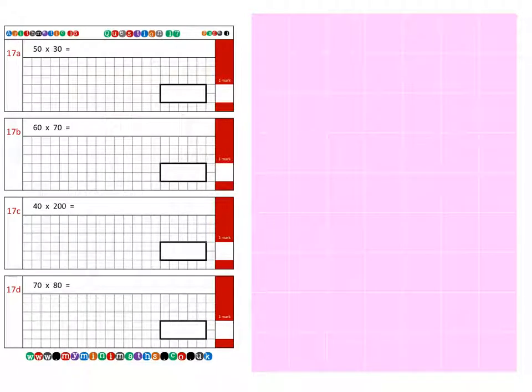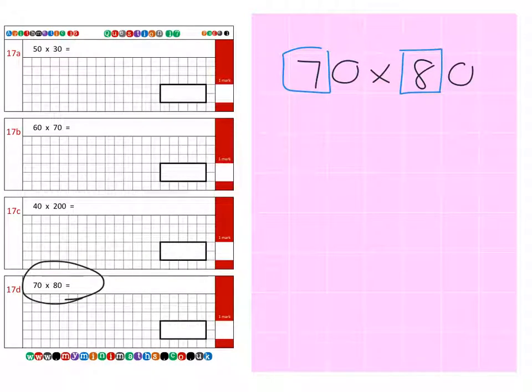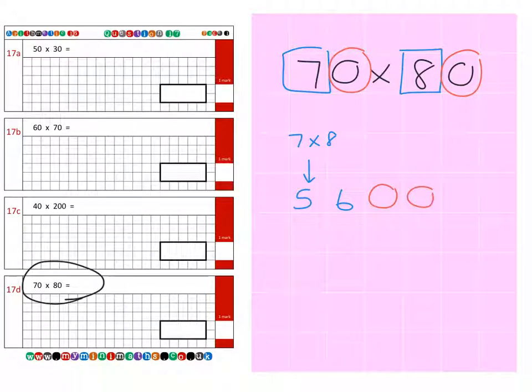And for the final question of today's tutorial, which is question 17d, we're multiplying 70 and 80 together. So we're finding the product of 70 and 80. So if we take our 7 and 8 and we multiply those together to make 56. And then we take our two 0s to give a final answer of 5,600.